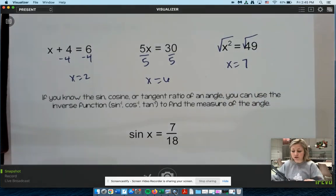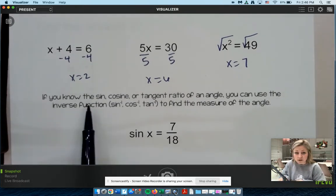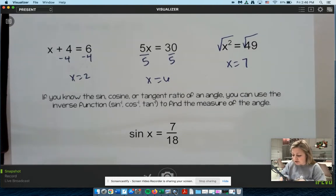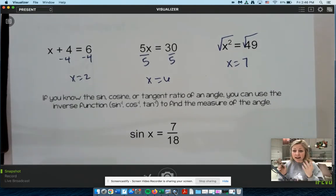So what we just did there are called inverse functions, like adding and subtracting undo each other. So they're inverse functions. Multiply, divide. Undo each other. So they're inverse functions. Squaring and square rooting undo each other. So they are inverse functions. So we have the same type of deal for trig. So if we know the sine, cosine, or tangent ratio of an angle, we can use the inverse function. So like you guys see on your calculator where it says negative 1, like sine negative 1, cosine negative 1.